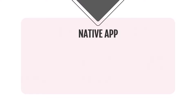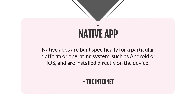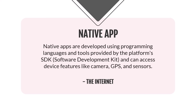We start with native apps. Native apps are built specifically for a particular platform or operating system, such as Android or iOS, and are installed directly on the device. They are developed using programming languages and tools provided by the platform's SDK (software development kit), and can access device features like cameras, GPS, and sensors.